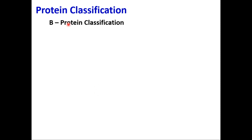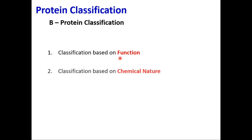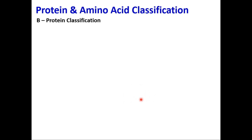Now we study protein classification. Proteins are classified based on their functions, chemical nature, nutrition, and other parameters. Classification based on functions gives us 7–8 important proteins. Starting with: number one, structural proteins — for example keratin (hair and nails) and collagen of bone. Number two, enzymes — hexokinase, pepsin, trypsin, chymotrypsin. Number three, transport proteins — hemoglobin.